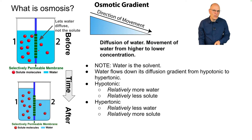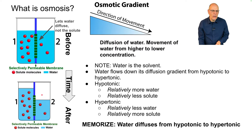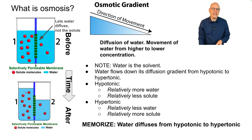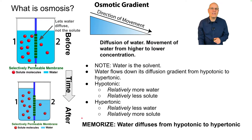After osmosis takes place, this level will go down and this level will go up. The water is actually being pushed up on the hypertonic side — that's called osmotic pressure, and it has enormous consequences. The key thing to memorize is that water diffuses from hypotonic to hypertonic.